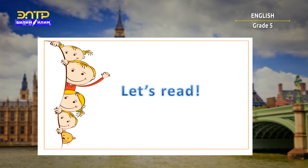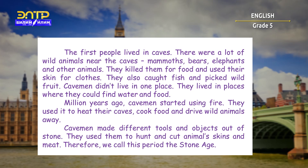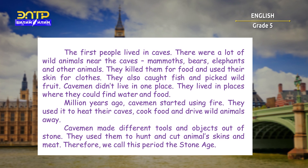Now we will read the text about life in the past. The first people lived in caves. There were a lot of wild animals near the caves — mammoths, bears, elephants and other animals. They killed them for food and used their skin for clothes. They also caught fish and picked wild fruit. Cavemen didn't live in one place; they lived where they could find water and food. Millions of years ago, cavemen started using fire. They used it to heat their caves, cook food, and drive wild animals away. Cavemen made different tools and objects out of stone, used them to hunt and cut animals' skins and meat. Therefore, we call this period the Stone Age.